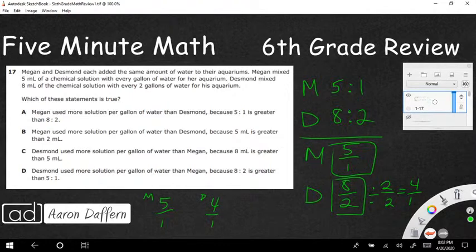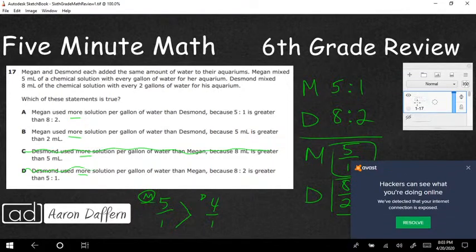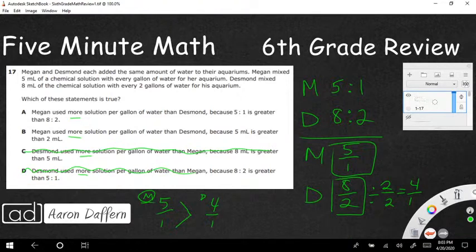Well, I can compare these two right now. If Megan's got 5 to 1 and Desmond has got 4 to 1, now we need to find which of these statements is correct. Megan used more is A and B, and Desmond used more is C and D. Well, once I've reduced my 8 to 2 to 4 to 1, I can compare them because they have the same denominators. 5 to 1 is definitely going to be larger than 4 to 1. So Megan used more. I'm going to get rid of C and D.